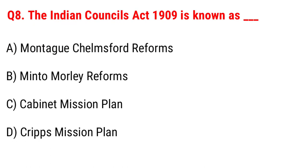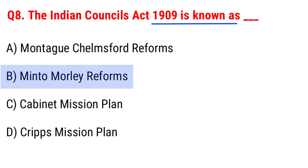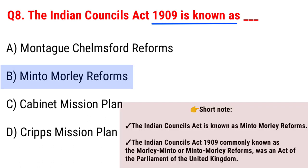Next question: the Indian Council Act 1909 is known as Option A, Montague-Chelmsford Reforms; B, Minto-Morley Reforms; C, Cabinet Mission Plan; D, Cripps Mission Plan. The right answer is Option B, Minto-Morley Reforms. Short note: the Indian Council Act 1909, commonly known as the Morley-Minto or Minto-Morley Reforms, was an act of the Parliament of the United Kingdom.